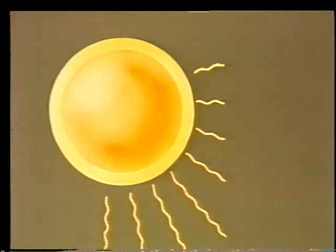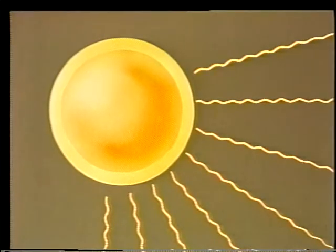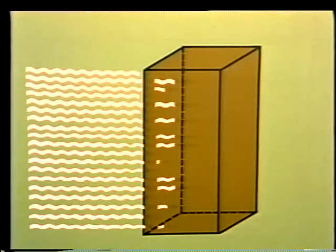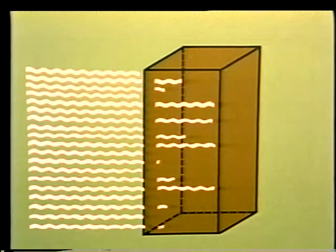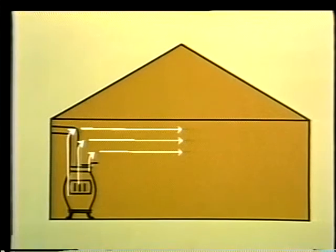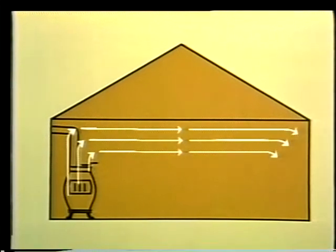Radiation is how heat is transferred across empty space. Conduction is how heat is transferred through solid objects. And convection is the transfer of heat due to the motion of liquids and gases. Heat exchangers use all three, to a greater or lesser degree, to perform their functions.